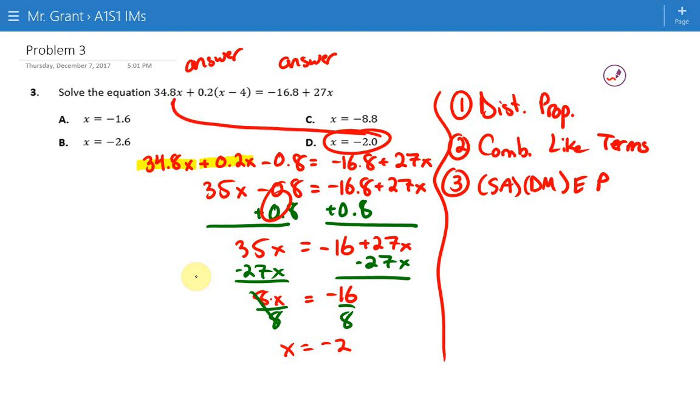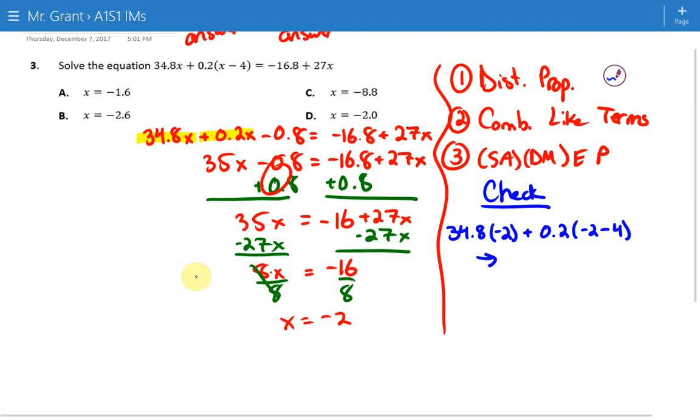Because you should have enough time on your test, it's important to take this -2 and plug it back in to make sure you get the right answer. On your calculator, to check your work, we're going to do 34.8 times -2 plus 0.2 times -2 minus 4, which will give us one answer. Then do the other side: -16.8 + 27 times -2. That will give us another answer. Check that they match. They will end up matching, and that's how we know -2 is our answer.